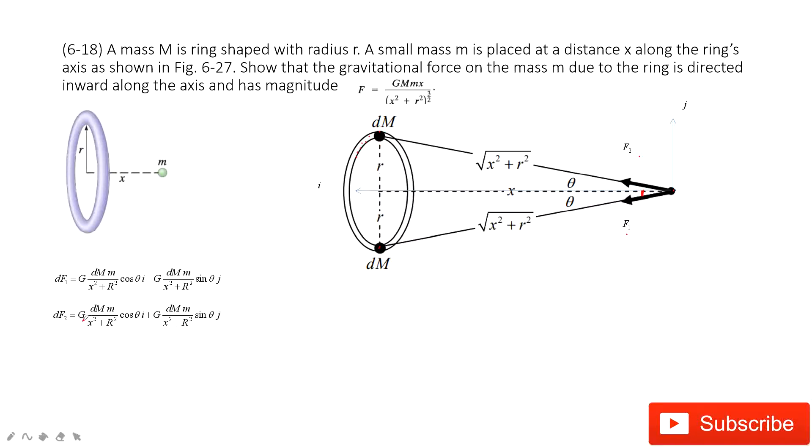This G constant times dm, small m, and then distance squared. And then we need to add them together. So after you add them together, you can see the j component is cancelled. You only have the x component, only have the i component.